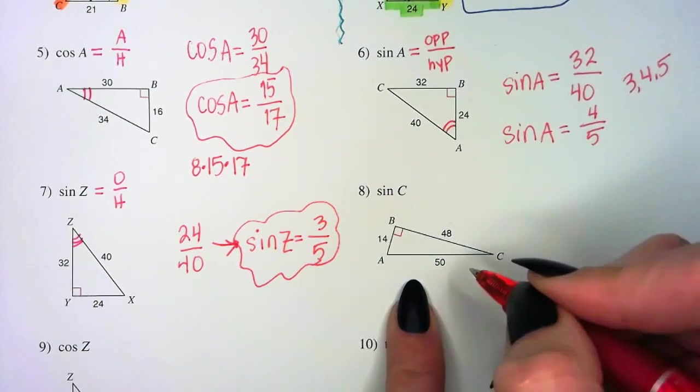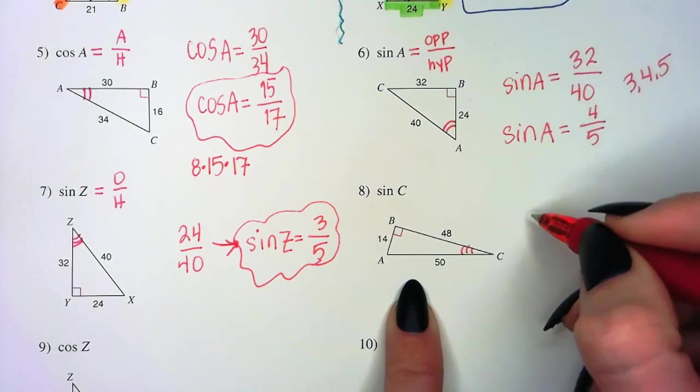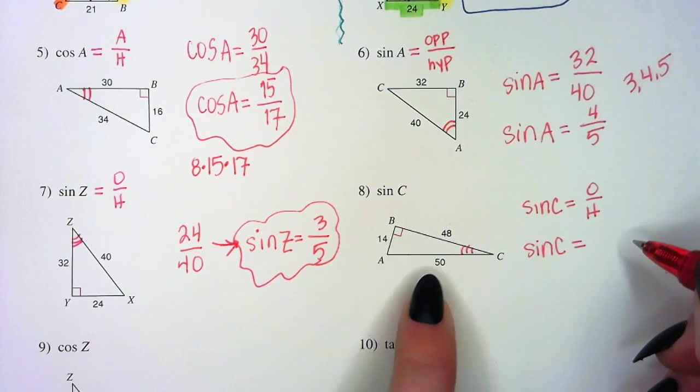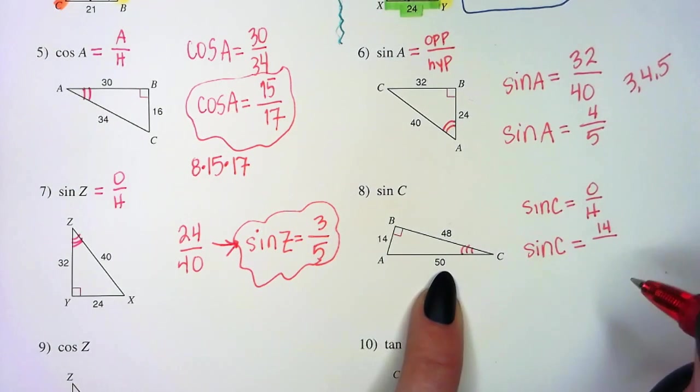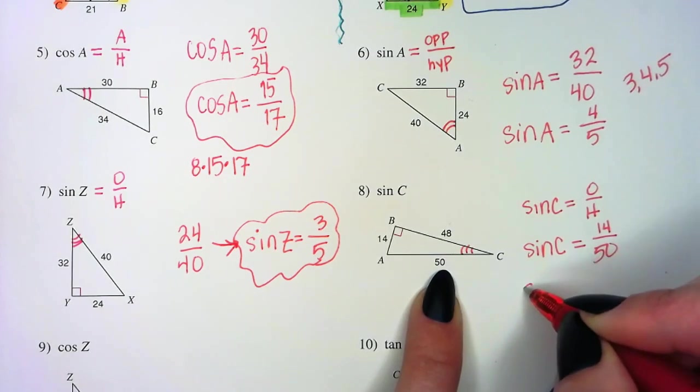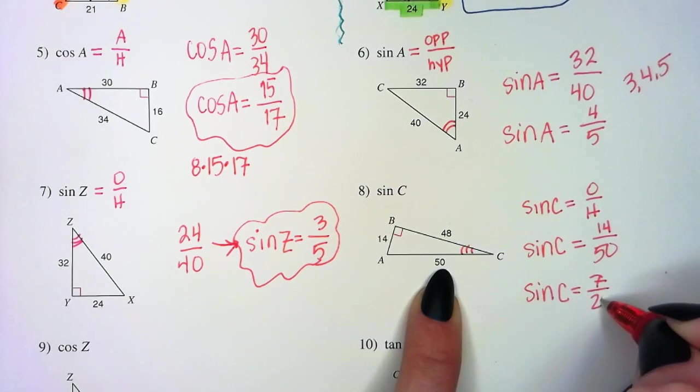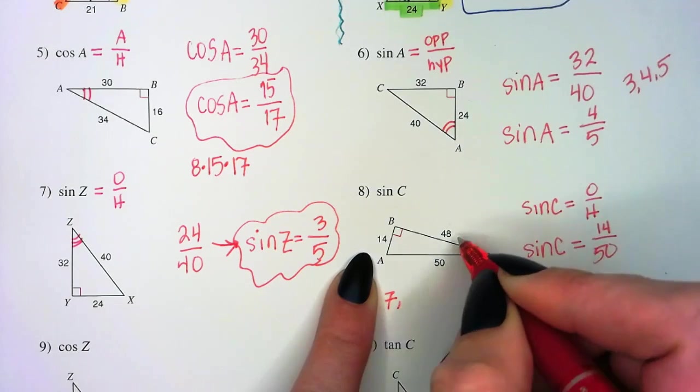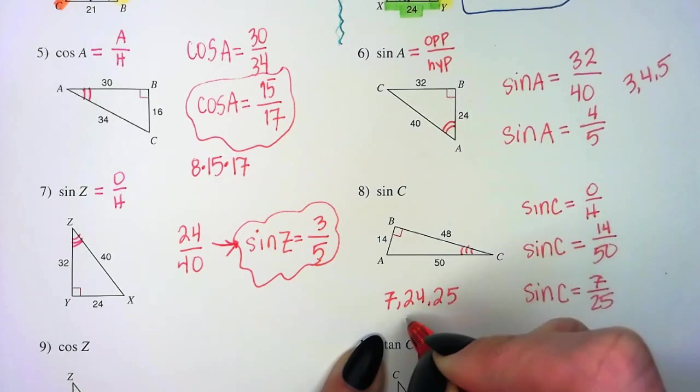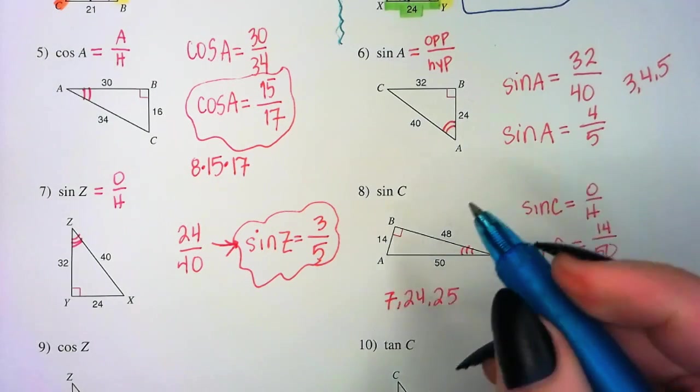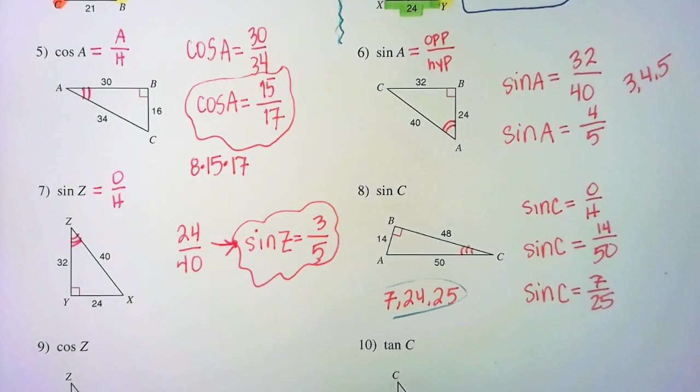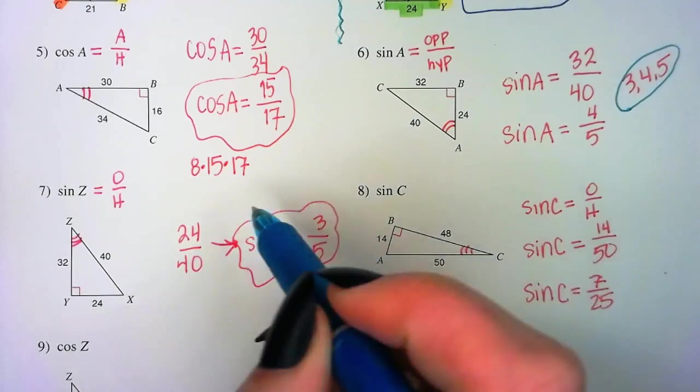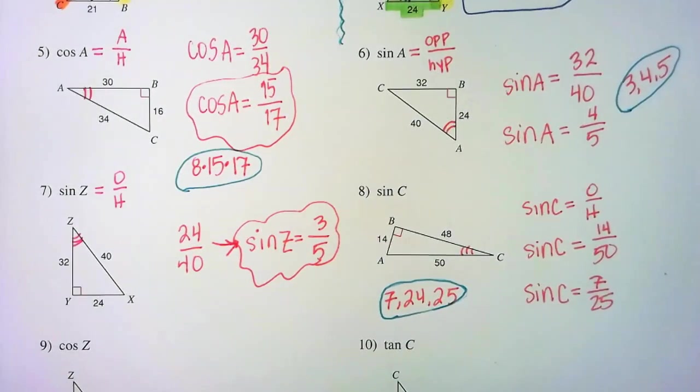Next up, sine of angle C. So, we have sine again, 3 times in a row. And, sine of C will be the opposite over the hypotenuse. Opposite is 14. Hypotenuse is 50. Both even. Let's chip away. Sine of C is 7 over 25. Here we have some new numbers for our Pythagorean triple. What numbers do we have? If I divide each in half, I have 7, 24, 25. So, there we have another Pythagorean triple.